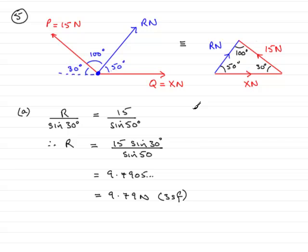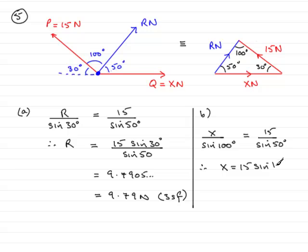Now in part b, we'll come down here. We're asked to find x. And again, I can do this very easily by the sine rule. Simply, x over the sine of 100 degrees equals 15 over the sine of 50. And rearranging this again gives x equals 15 sine 100 degrees all over the sine of 50 degrees.